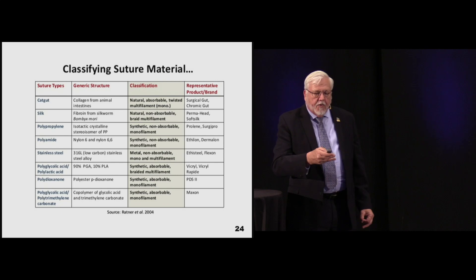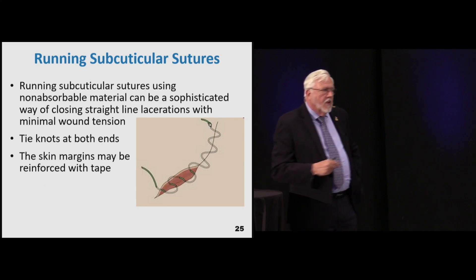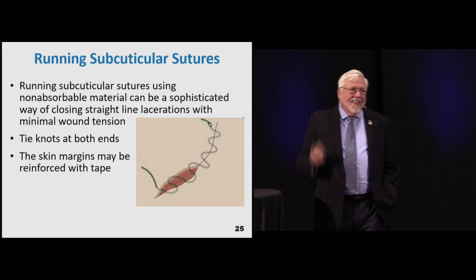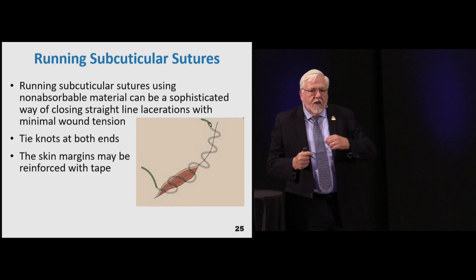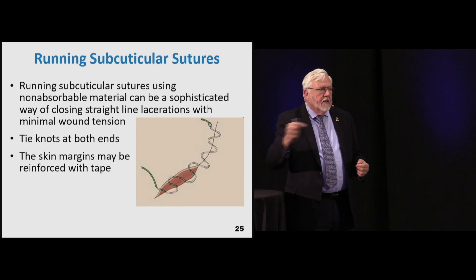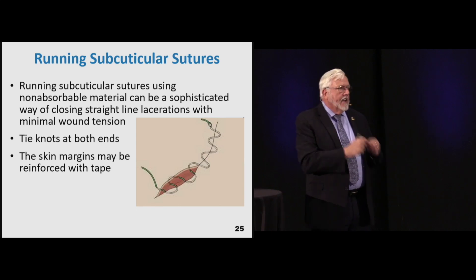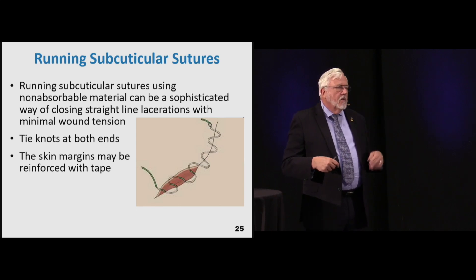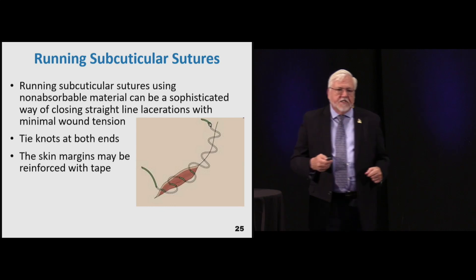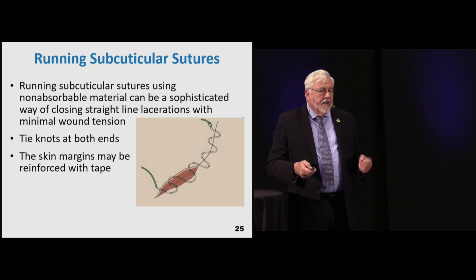There are all different ways of suturing depending on the wound. The running subcuticular suture using non-absorbable material is a great easy way to close a wound - it nicely brings skin edges together. Start at one end, tie a knot, go through in a circular fashion, tie a second knot, and you can reinforce with tape. It's easy to do and works well for linear lacerations.